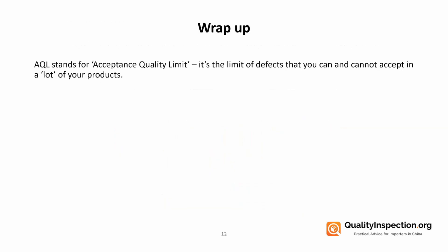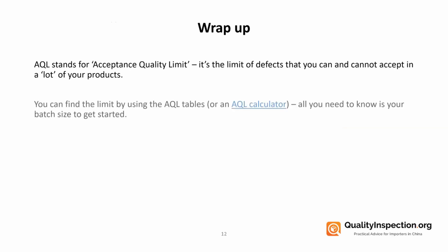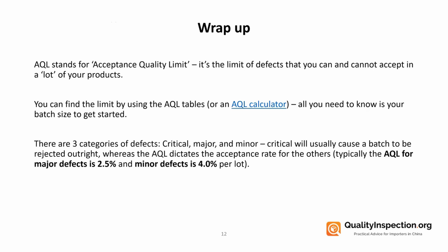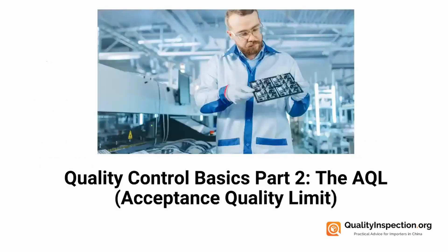AQL stands for Acceptance Quality Limit — the limit of defects you can and cannot accept in a lot of your products. You can find the limit easily using the AQL tables or AQL calculators; all you need to know is your batch size to get started. There are three categories of defects: critical, major, and minor. Critical defects will lead to a batch being rejected outright. Typically the AQL for major defects is 2.5% and for minor defects is 4%. Now you know how to define the number of defects you are happy to accept per lot, which will help your supplier produce products at the quality you need.